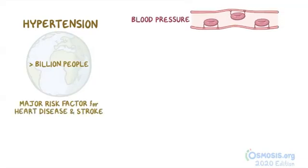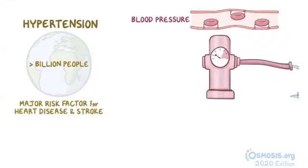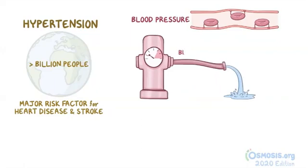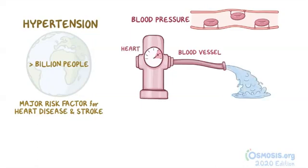Blood pressure is the force that blood exerts on the walls of blood vessels. There are a number of factors that determine blood pressure. For example, imagine a hose connected to a pump where the hose is the blood vessel and the pump is the heart. If more water is pumped out, the pressure in the hose increases.